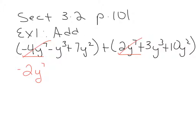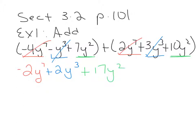The terms with the next highest degree would be y cubed: negative 1y cubed plus 3y cubed. When you add negative 1 plus 3, you get 2, so this would be positive 2y cubed. These last two terms — 7y squared and 10y squared — are also like terms. When you add them together, positive 7 plus positive 10 give you positive 17y squared. And that is how you add polynomials.